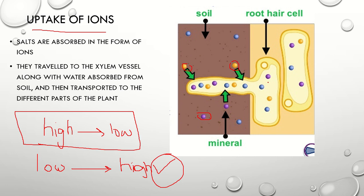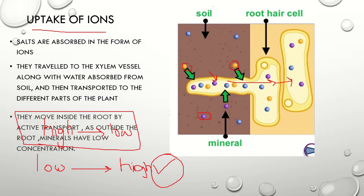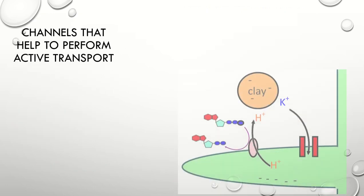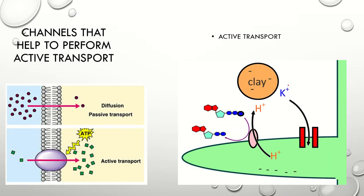After absorption, molecules move to different parts of the cell. For example, in a root, once absorbed, they move from one cell to the next until they reach the main area where they are utilized. In this diagram you can see the root cell. We have a soil particle — clay — and then we have minerals and protons. There are specific gates called channels.